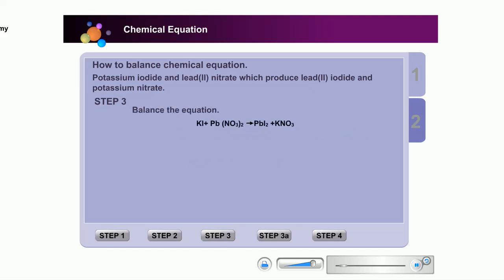Next, balance the equation. To balance the equation, you need to adjust the coefficient in front of the chemical formulae. Do not change the subscripts of the formula. If you do, you are actually changing the correct formula.